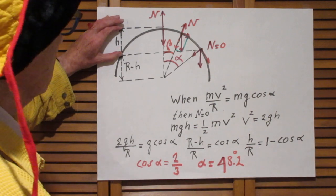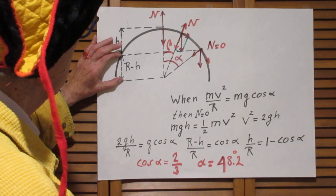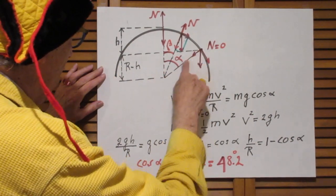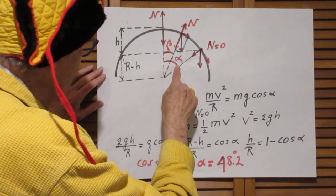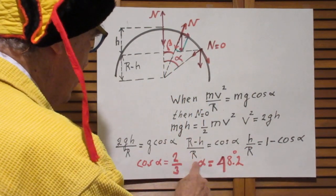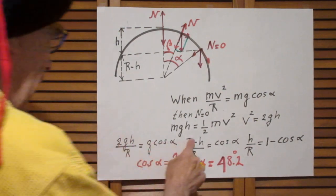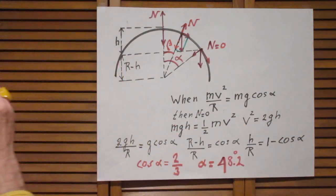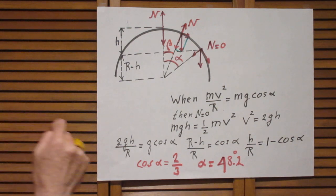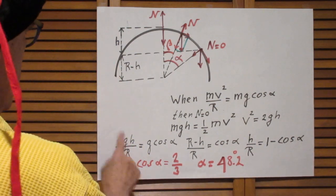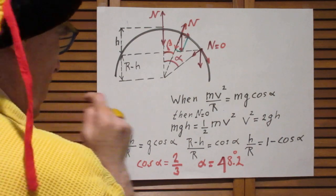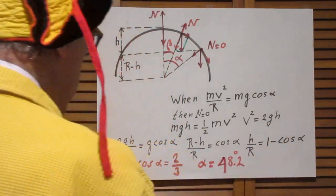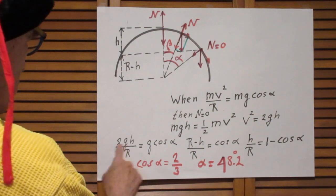If this is h, then this here is r minus h. But r minus h divided by r is the cosine of that angle alpha. Isn't that nice? r minus h divided by r is the cosine of alpha. So h over r is 1 minus cos alpha. I go back to this equation. So h over r is 1 minus cos alpha. I put that in here.